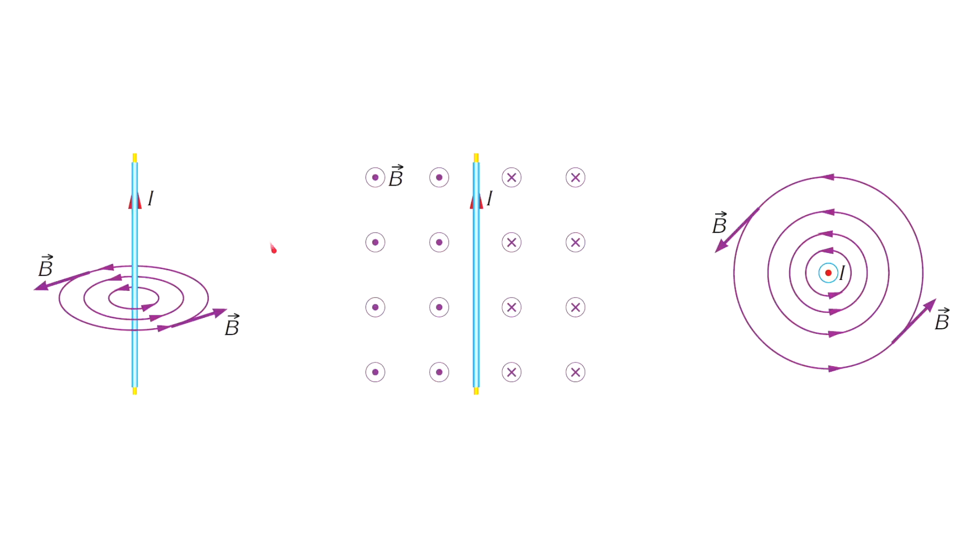We use the vector B to represent the magnetic field. The magnitude of the vector is the strength of the magnetic field, and the direction of the vector is the field's direction.